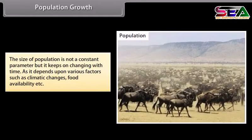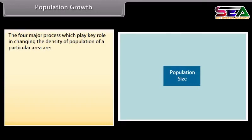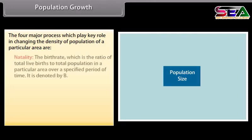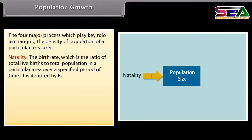The size of a population is not constant but keeps changing with time, depending on various factors such as climatic changes and food availability. The four major processes that play a key role in changing population density are: natality — the birth rate, denoted by B; and mortality — the ratio of total deaths to total population, denoted by D.